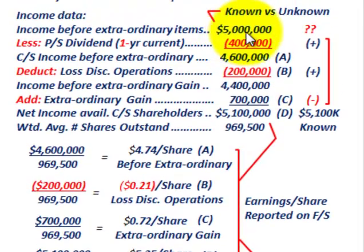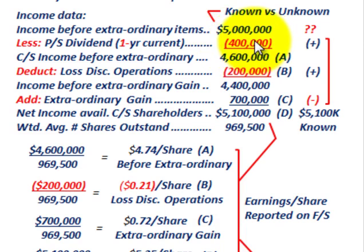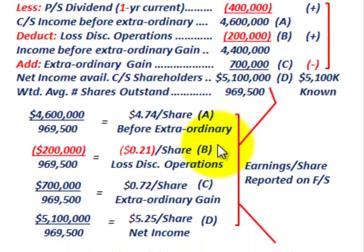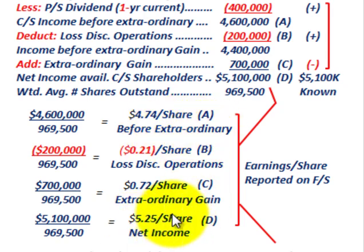One important note: when dealing with preferred stock dividends, you start with income before preferred stock dividends and then subtract the preferred stock dividend to come up with common stock income before extraordinary items. That preferred stock dividend has to come out first. So we've made our earnings per share calculations for the losses and extraordinary gains, determined the per share basis before extraordinary gains, and then the EPS for net income available to common stock shareholders.